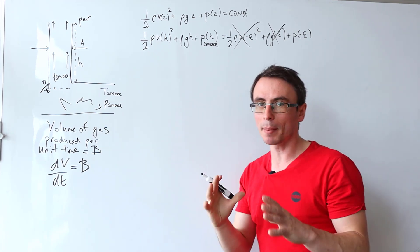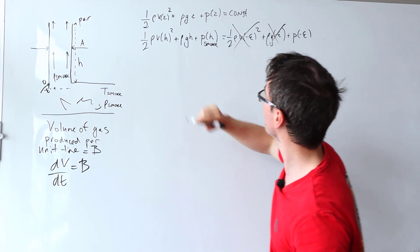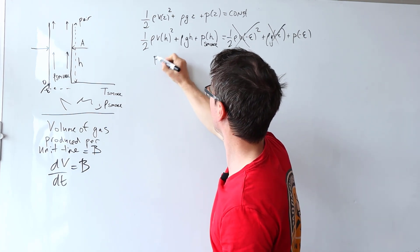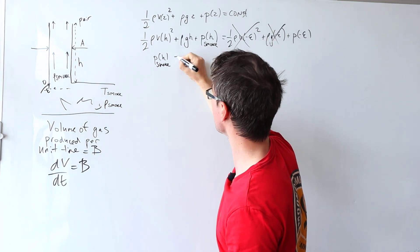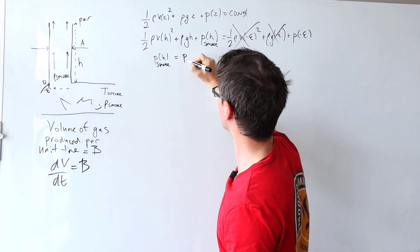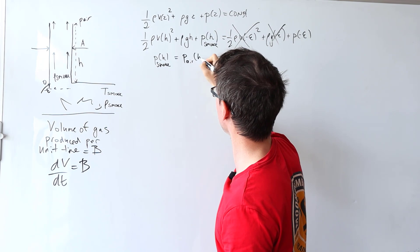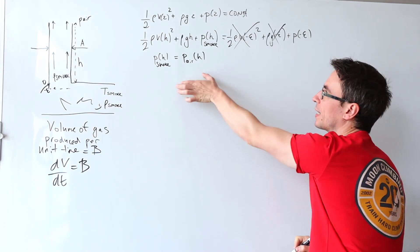So as a minimum condition for the minimum height, I'm going to say that p of h of the smoke has to be at least equal to the pressure of the air at that height h.